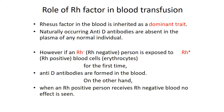RH factor in the blood is inherited as a dominant. Naturally occurring D antibodies or RH antibodies are absent in the plasma of any normal individual. Even RH positive persons contain RH antigen, whereas RH antibodies are naturally absent in any individual. However, when an RH negative person is exposed to RH positive blood cells for the first time, anti-D antibodies are formed in the blood. On the other hand, when an RH positive person receives RH negative blood, no effect is seen.